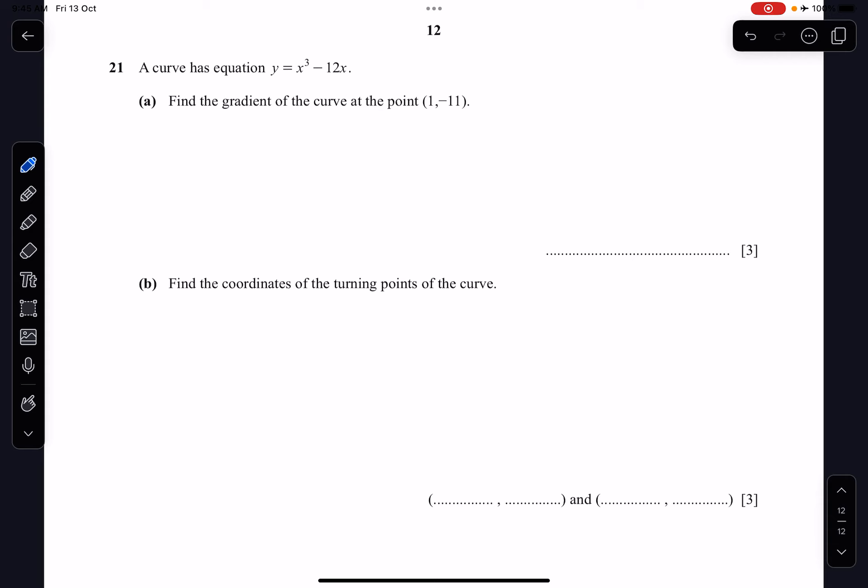We are looking at question number 21. So question number 21 says that the curve has equation y equals to x cubed minus 12x. Take note that this is not a straight line, this is actually a cubic curve.